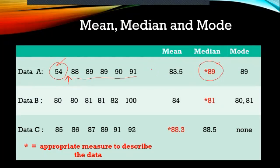In data set B, the values from 80 to 82 are close together, but there's an extremely high value. Again, we use the median to describe this data set because of the extreme value. If you locate the mean — which is 84 — it is not in the middle either.